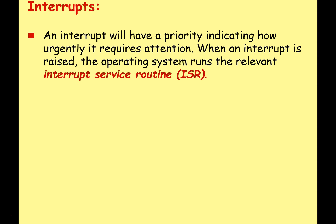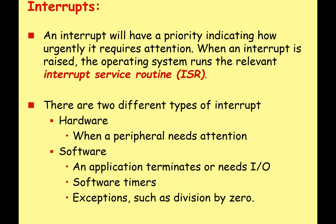An interrupt will have a priority indicating how urgently it requires attention. When an interrupt is raised, the operating system runs the relevant interrupt service routine, or ISR. There are two main different types of interrupt: hardware, when a peripheral device needs attention, or software — for example, an application terminates or needs some input/output, software timers, or exceptions such as division by zero.